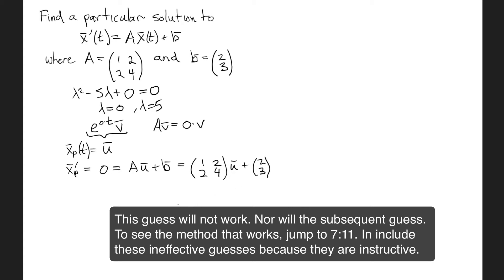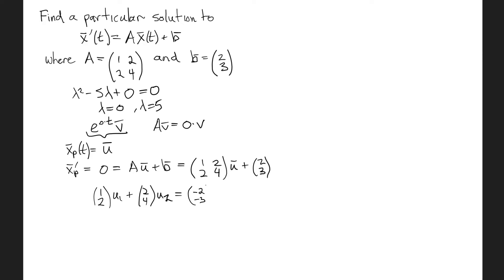I'm going to rewrite this in a slightly more instructive way, which is to write it as a vector 1, 2, the first column of A multiplied by the first component of u plus the vector 2, 4 multiplied by the second component of u. And that is going to have to be equal to minus 2, minus 3 on that side. Now the question is can we find u1 and u2 to add up the vector 1, 2 and 2, 4 to get minus 2, minus 3.